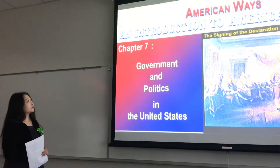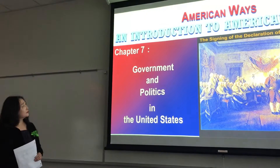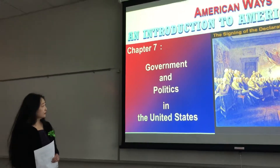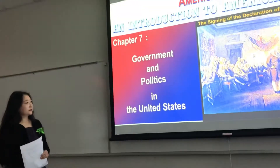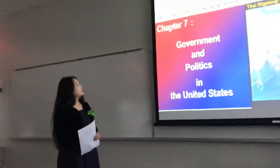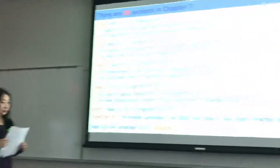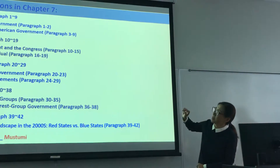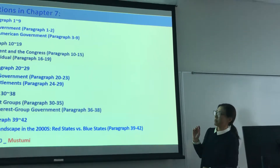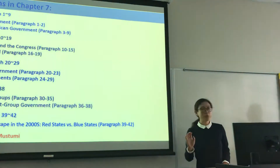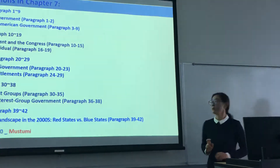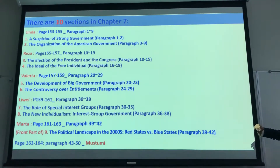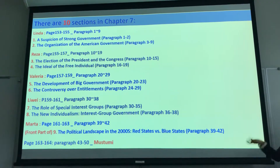Our topic is chapter 7 — the topic is government and politics in the United States. There are ten sections in chapter 7 and we have six persons, actually today only five persons. We are in charge of different sections and the first one is Linda, so now let's have Linda present.